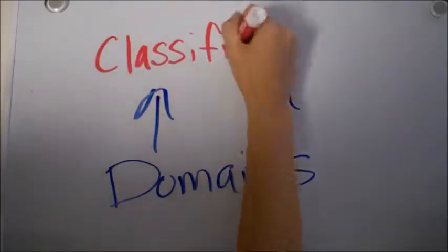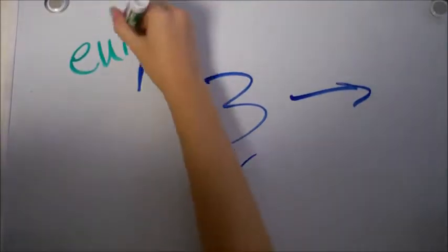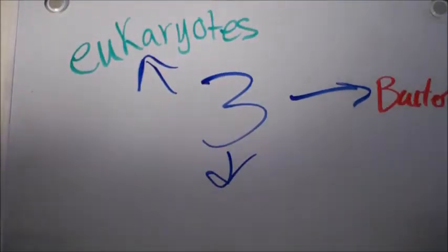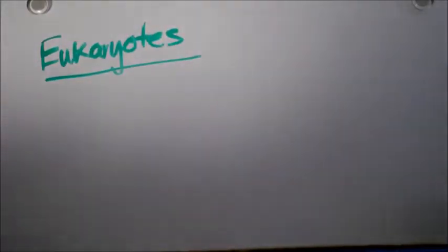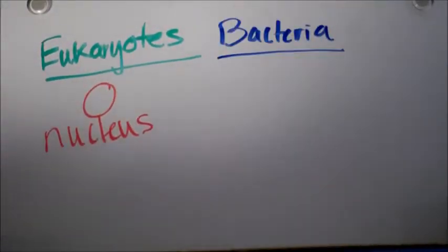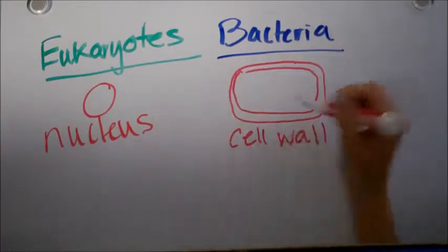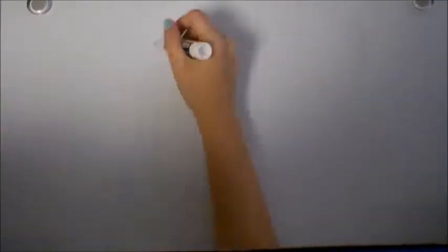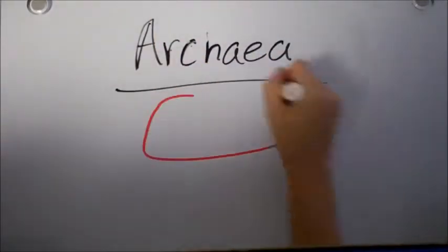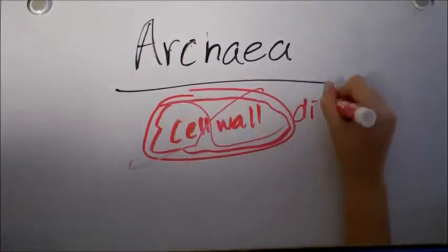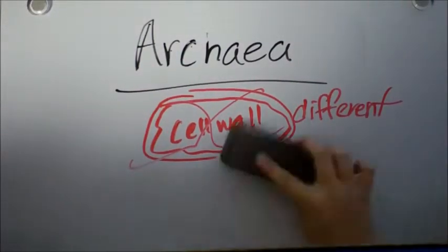Domains is the highest you can get with classification. And they are eukaryotes, bacteria, which you can't see, and archaea. Eukaryotes, they have a nucleus. Bacteria has a cell wall, but no nucleus. Archaeas, they have a cell wall, but it's different. But no nucleus.